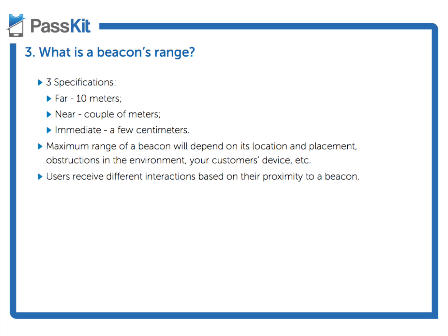There are actually three different specifications that a Beacon's range has. The first one being far, which is approximately 10 meters away from the Beacon. The next one is near, which is between a couple of meters from the user's location and the Beacon. And finally, immediate, which is as close as a few centimeters.